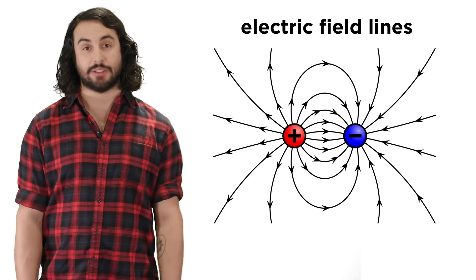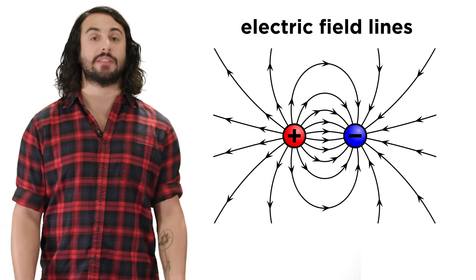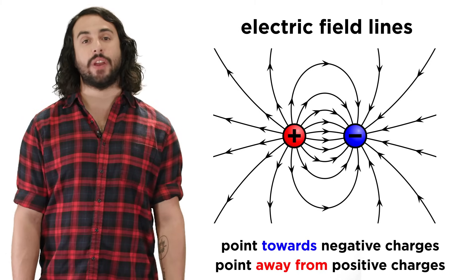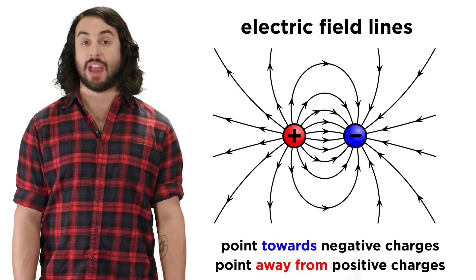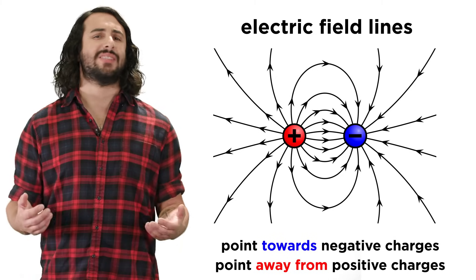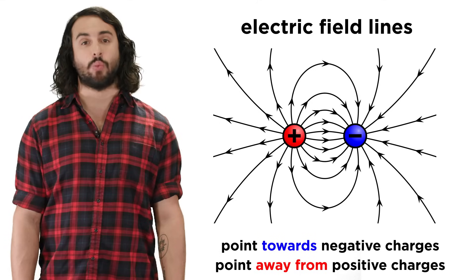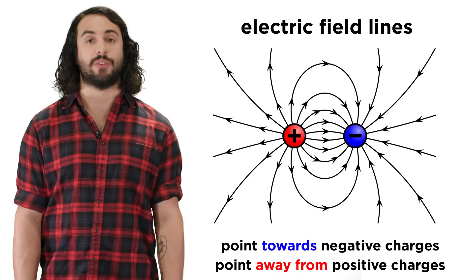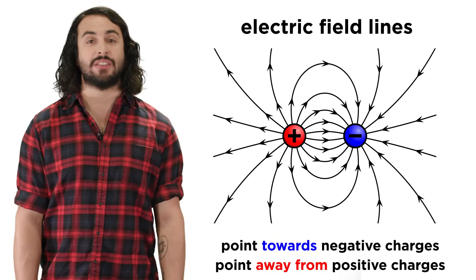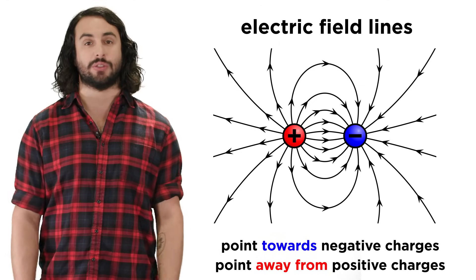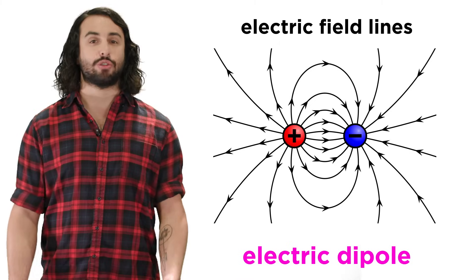One way we depict electric fields is by drawing electric field lines, which generally point towards negative charges and away from positive charges, and do not cross. These don't really exist, but they are a convenient way to analyze the direction of a field at any point in space, like the field produced by these two oppositely charged particles, which we can call an electric dipole.